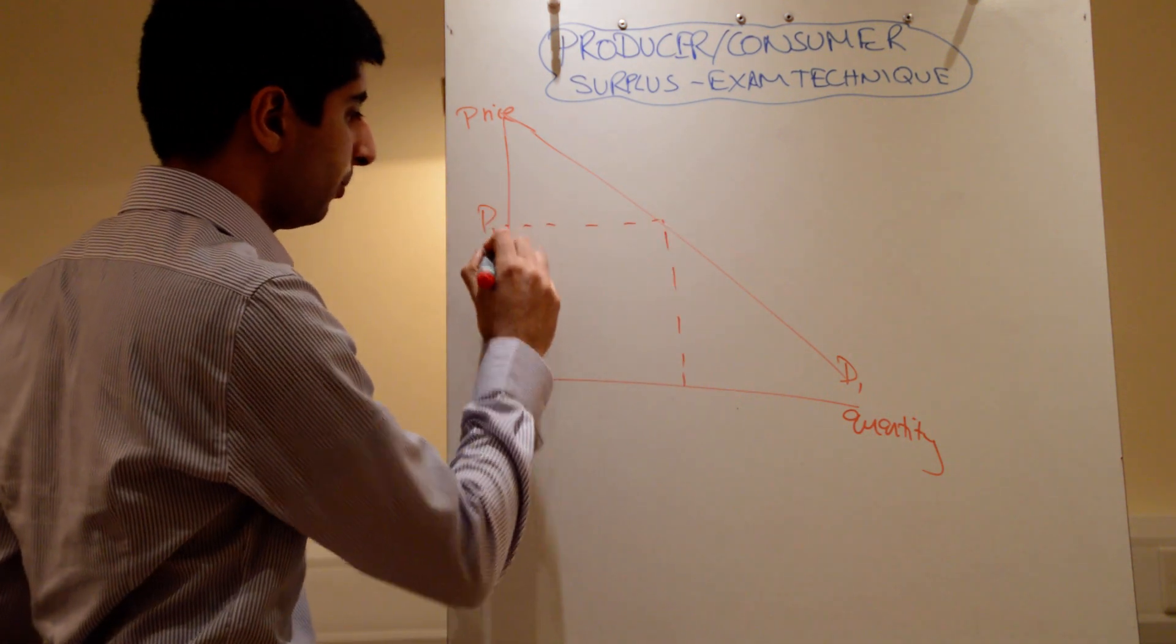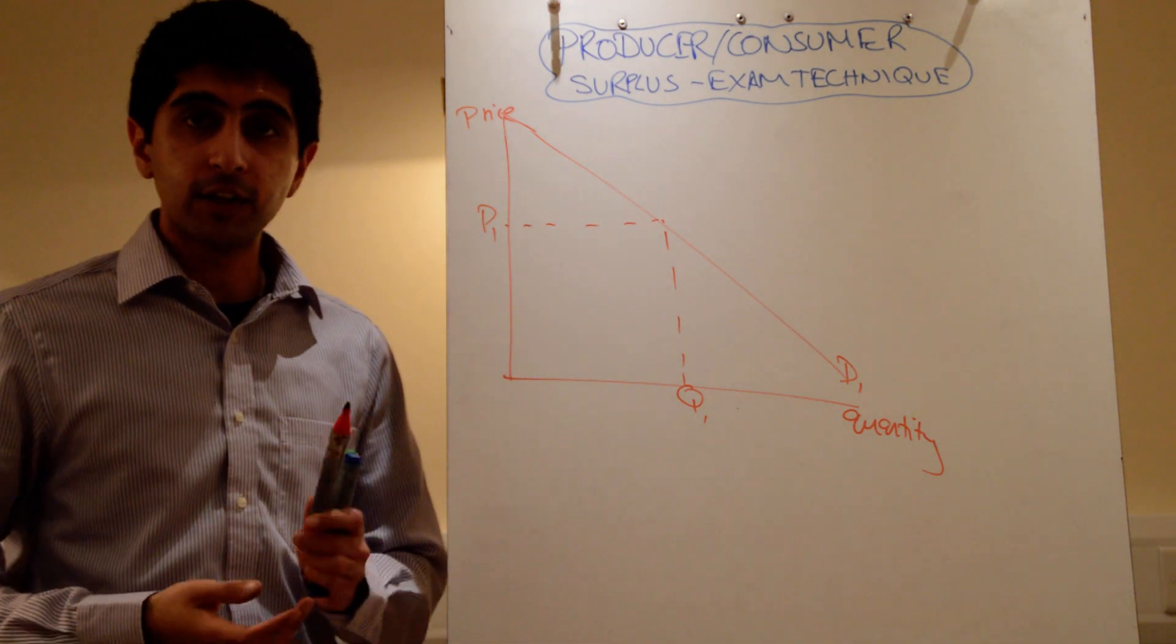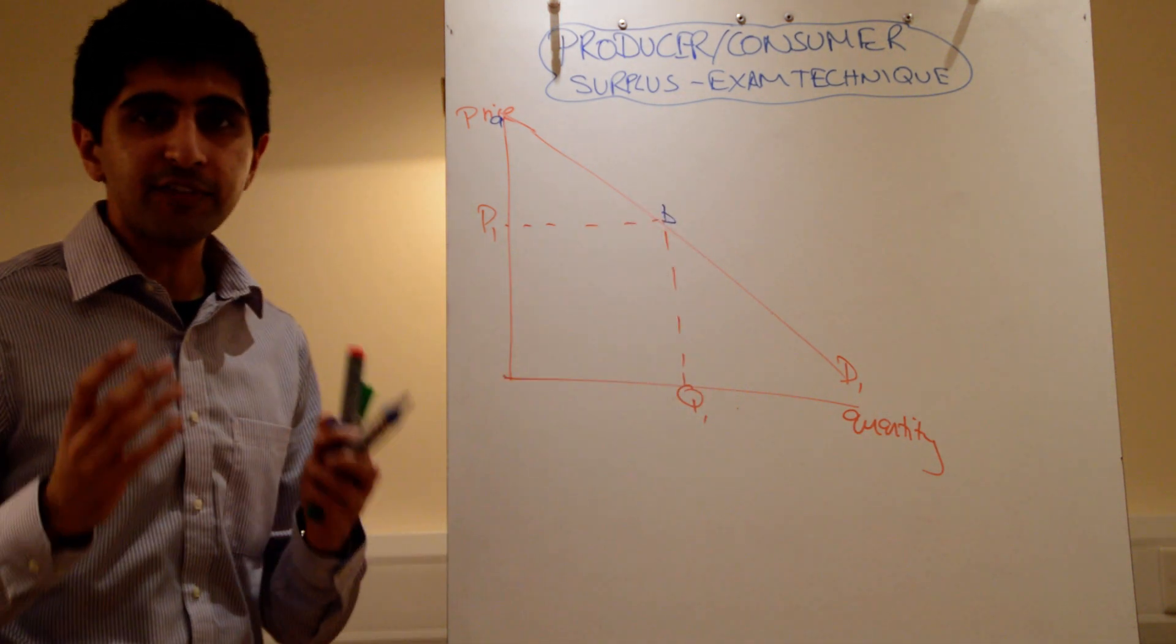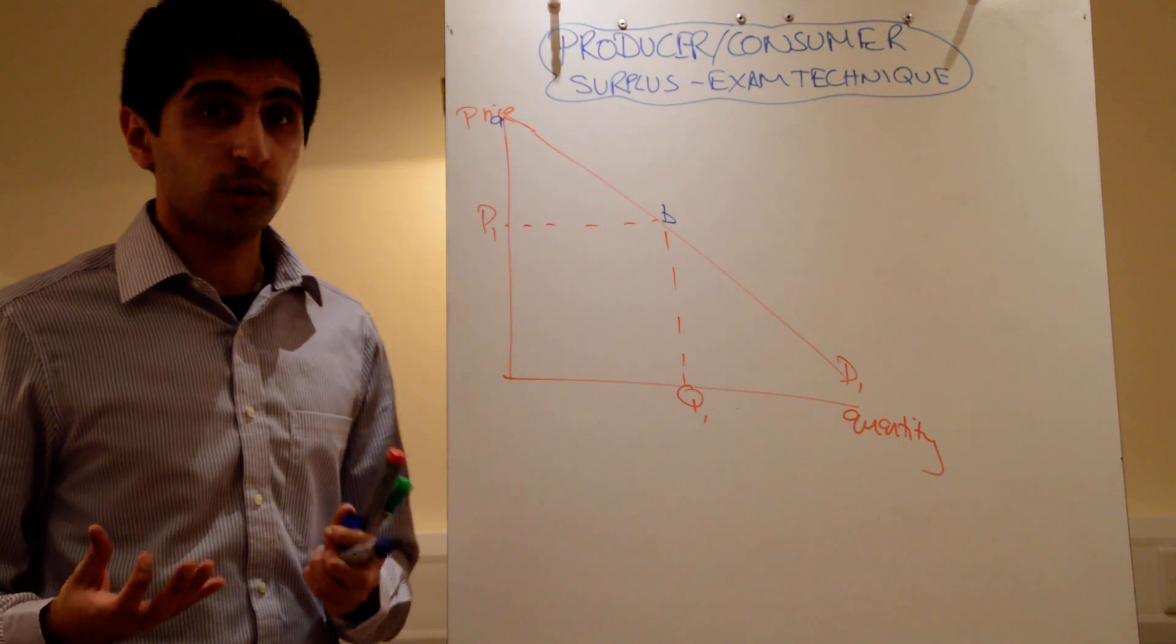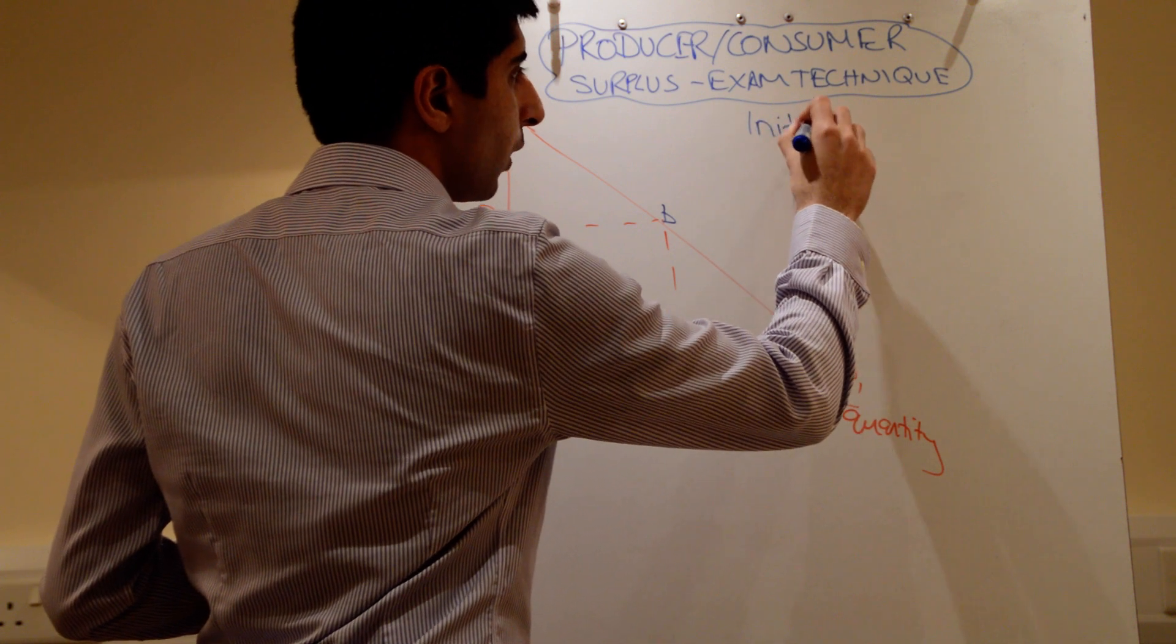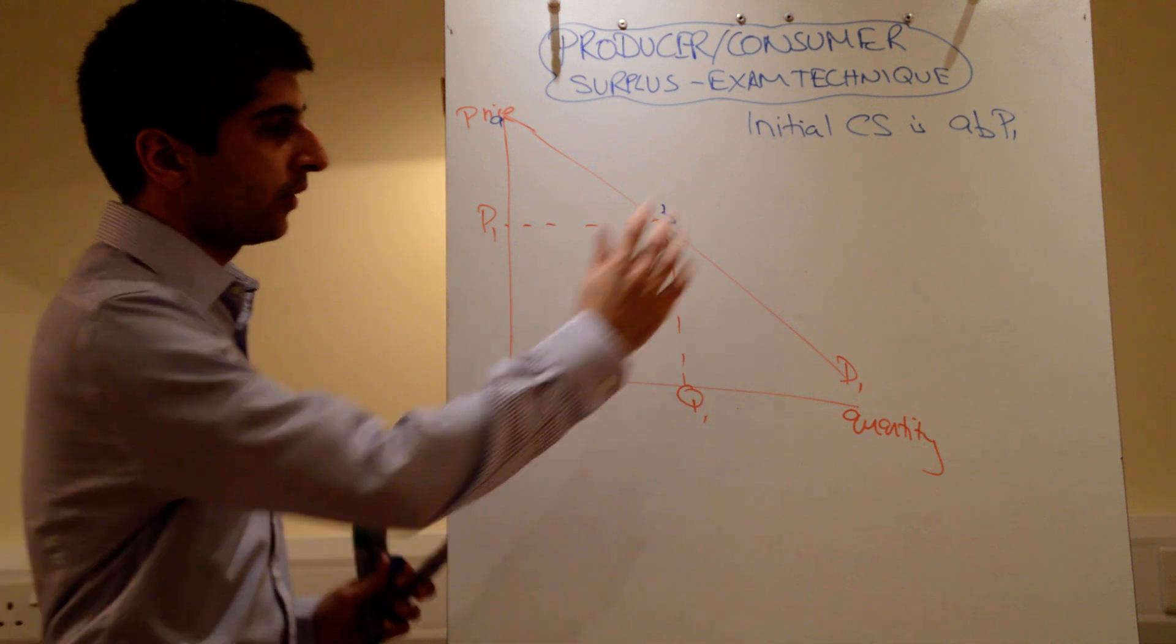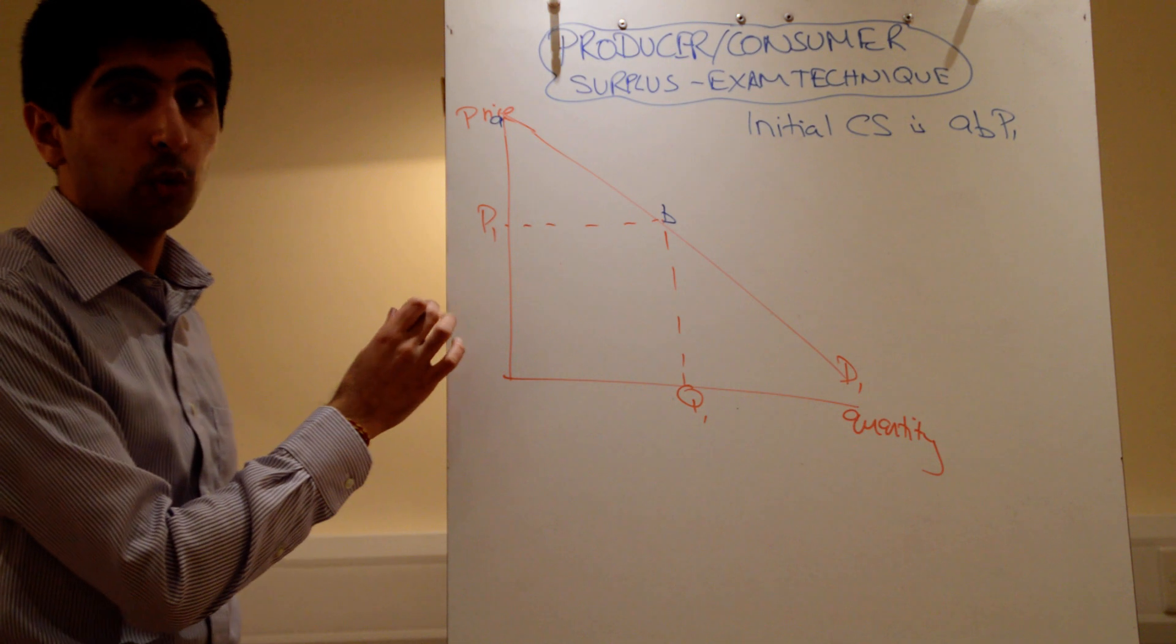Then pick a price somewhere in the middle of the curve, P1, Q1. All you're trying to do is say, well, when the price goes up, what happens to consumer surplus? At this stage, I would say, label your initial consumer surplus. You know consumer surplus is the difference between the prices consumers are willing and able to pay and what they actually pay for a good or service. So the initial consumer surplus, I would say it's worth writing this down on the side. Initial consumer surplus is triangle ABP1. Why not write that down on the side? Or if you've got space down below, write it down below. The initial consumer surplus at price P1.